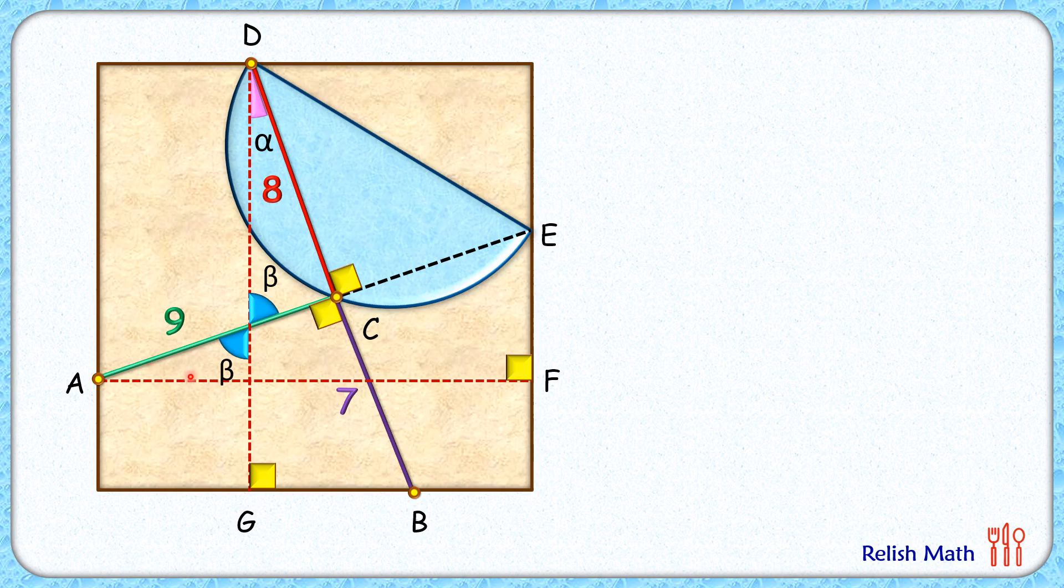In triangle AFE and triangle DGB, they have angles alpha and 90 degrees, and sides between these two angles—that is AF and DG—are the sides of the square and thus equal to each other. So by angle-side-angle, these two triangles are congruent. As the triangles are congruent, the corresponding sides will be equal.